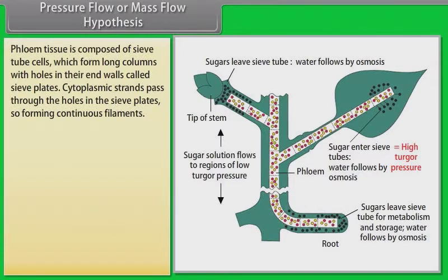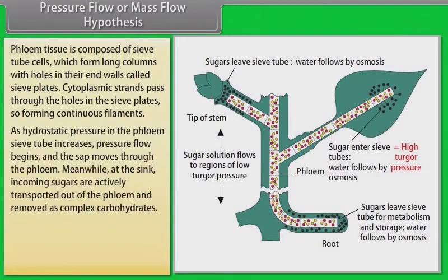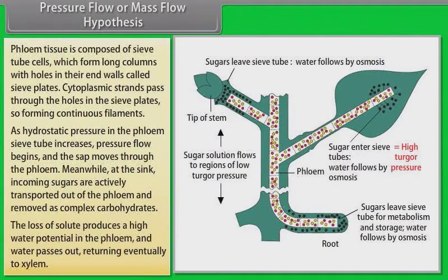Cytoplasmic strands pass through the holes in the sieve plates, so forming continuous filaments. As hydrostatic pressure in the phloem's sieve tube increases, pressure flow begins and the sap moves through the phloem. Meanwhile, at the sink, incoming sugars are actively transported out of the phloem and removed as complex carbohydrates. The loss of solute produces a high water potential in the phloem, and water passes out, returning eventually to xylem.